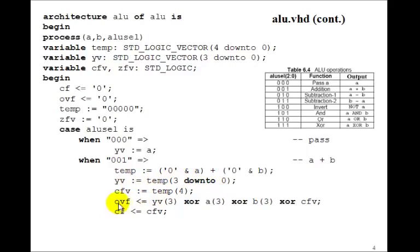You remember how we calculated the overflow flag in the addition example. We take Y variable 3, exclusive or with A3, exclusive or with B3, exclusive or with the carry flag. You can go back and look at how we did that. It's exactly the same. And the carry flag is the carry flag variable. So this is the case of ALU select equal to 1.